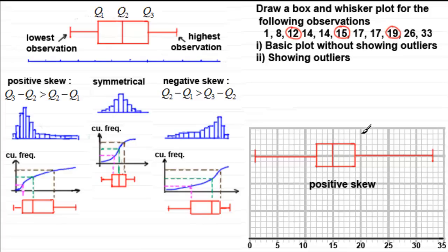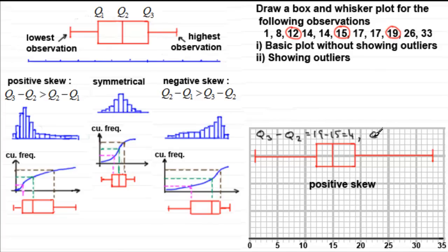But suppose you just had a lot of data with no diagram and you wanted to calculate the type of skewness. You would need to work out Q3 minus Q2: that's 19 minus 15, which equals 4. Then Q2 minus Q1: that's 15 minus 12, which equals 3. Since Q3 minus Q2 is greater than Q2 minus Q1, we have positive skew.